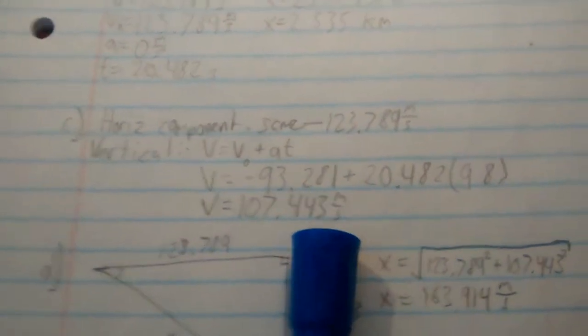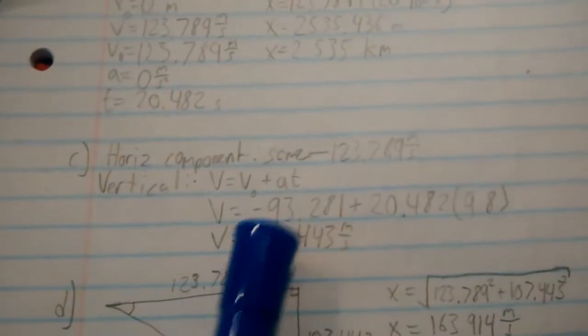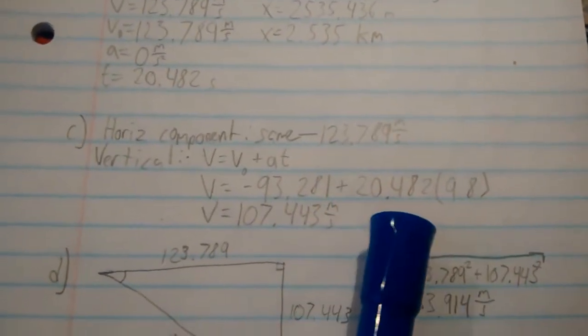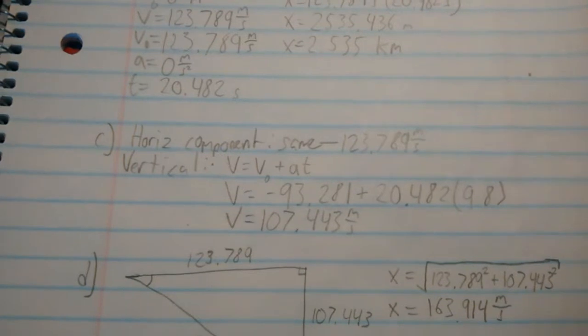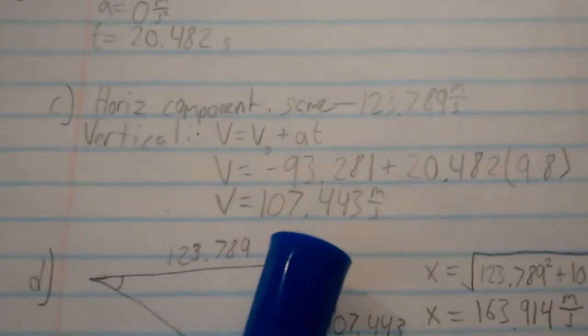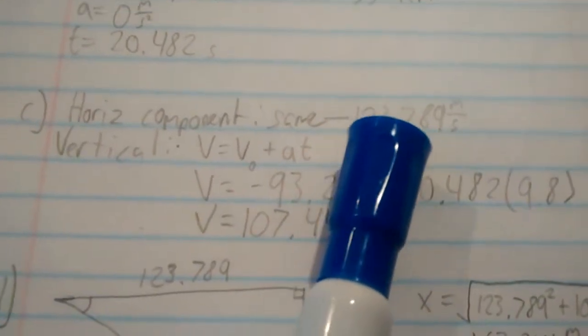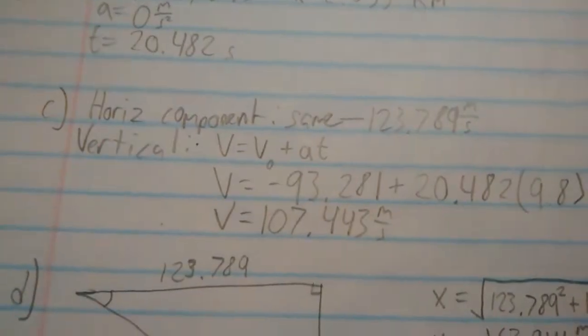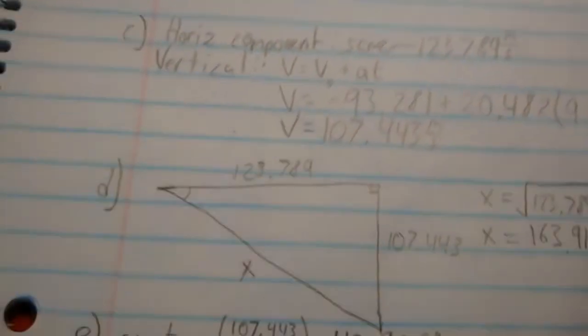So back to where we were. I'll save you from the calculations. You can thank me for that later. Negative 93.281 is V naught plus 20.482 is the time and 9.8 is the acceleration. So we get our final value is 107.443 meters per second. And that is our final vertical velocity. And remember, we figured out earlier that 123.789 was our final horizontal velocity. So those are the two vectors of our final velocity vector. Those are our two sub-component vectors.